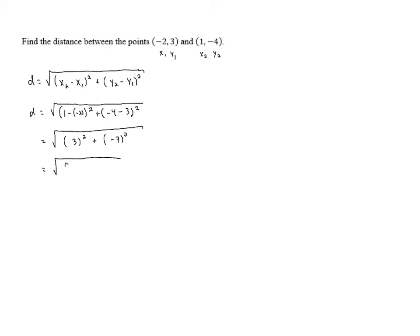3 squared is 9, and negative 7 squared is 49. So we've got 9 plus 49, which gives us 58.